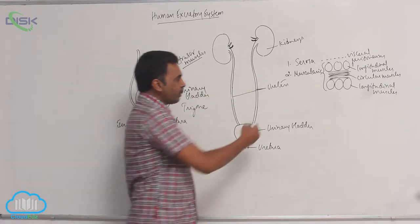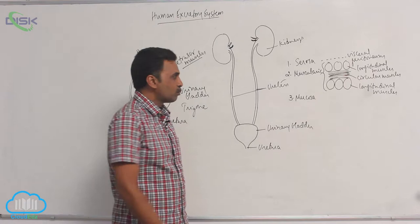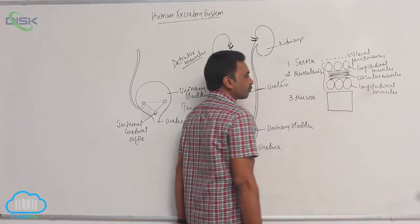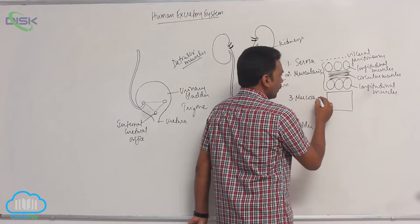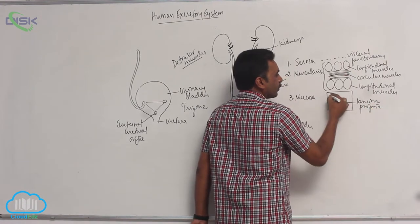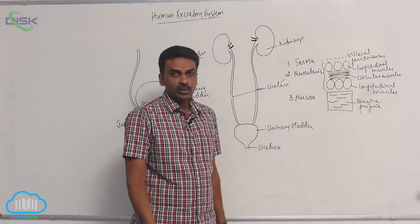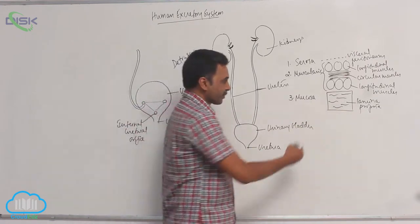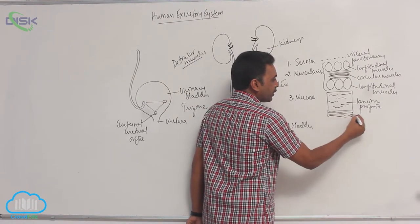Followed by the muscularis, the third layer is called the mucosa — the innermost layer is the mucosa. The mucosa contains the lamina propria, which is connective tissue containing blood vessels, lymph vessels, and fibers, followed by transitional epithelium.